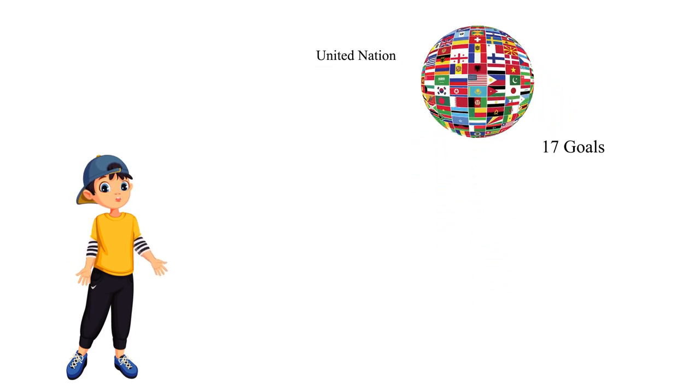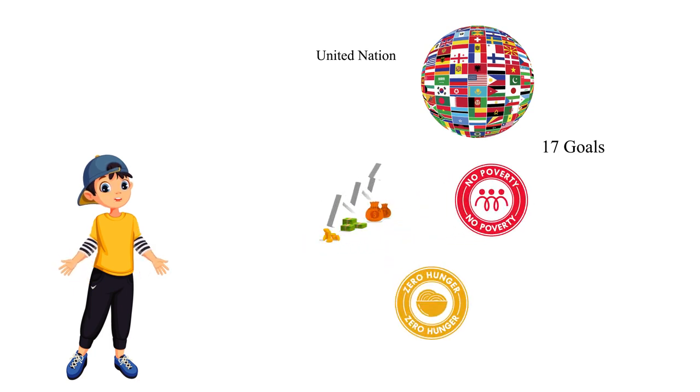The 17 goals include sustainable economic growth, no poverty, zero hunger, clean water and sanitation, affordable and clean energy, and responsible consumption and production. It is hoped that they will be reached by 2030.